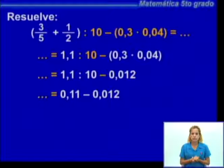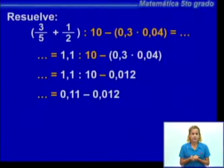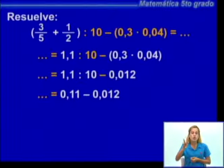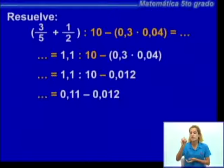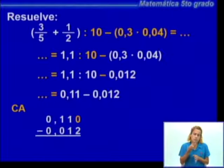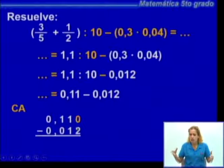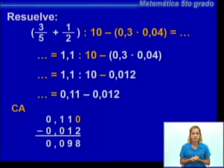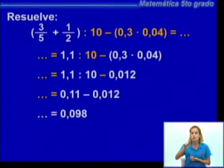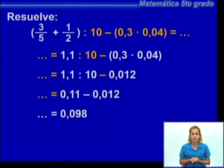Tenemos planteada una división: 1,1 entre 10. Recuerden que en la división por la unidad seguida de cero, corremos la coma un lugar hacia la izquierda, por lo tanto es igual a 0,11. Y por último realizamos la sustracción: 0,11 menos 0,012. El 0,11 es mayor que 0,012 porque tiene una décima. Al sustraer nos quedaría 98 milésimas. Es decir, este ejercicio al final nos da 98 milésimas, resuelto mediante la prioridad de las operaciones.